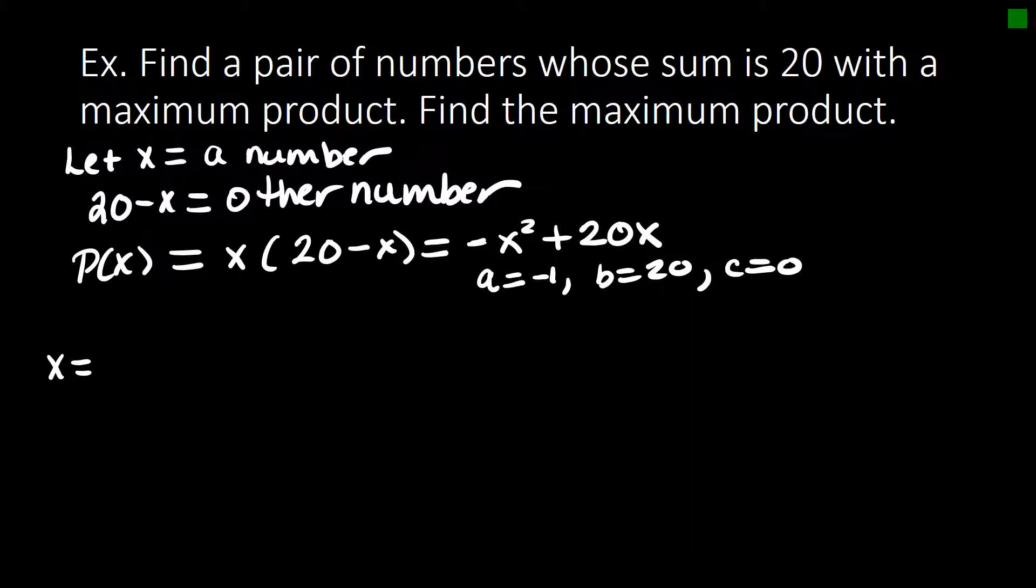So the vertex formula is x equals negative b over 2a. That's the first coordinate. So we have negative 20 over 2 times negative 1. And this is 10.